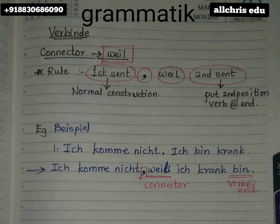Hello students. Today we are going to see a grammar topic in which we are going to learn how to use the word 'weil', spelled W-E-I-L, pronounced 'while'. The spelling is in front of you, marked in a square with a red color pen. The pronunciation I am making clear for you — you can write the pronunciation with your pencil.